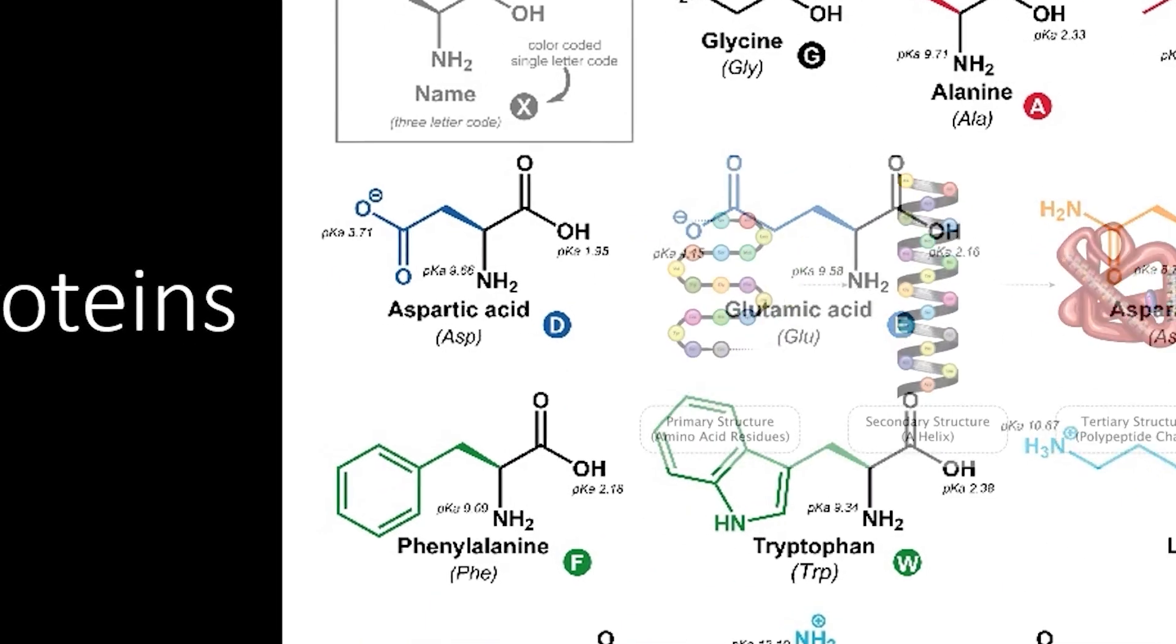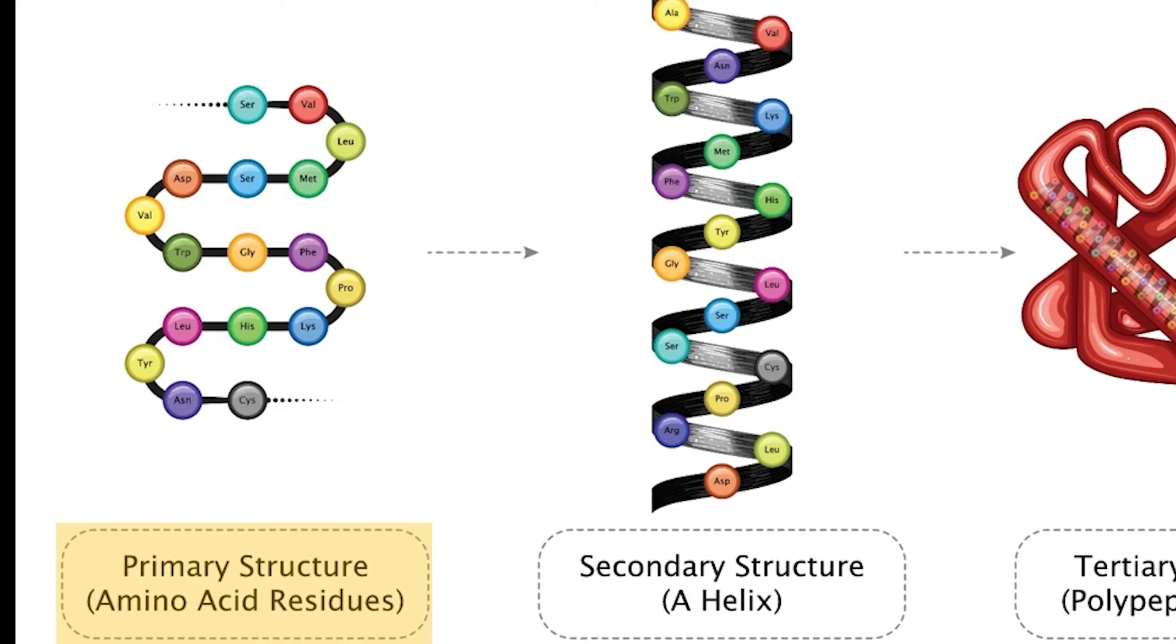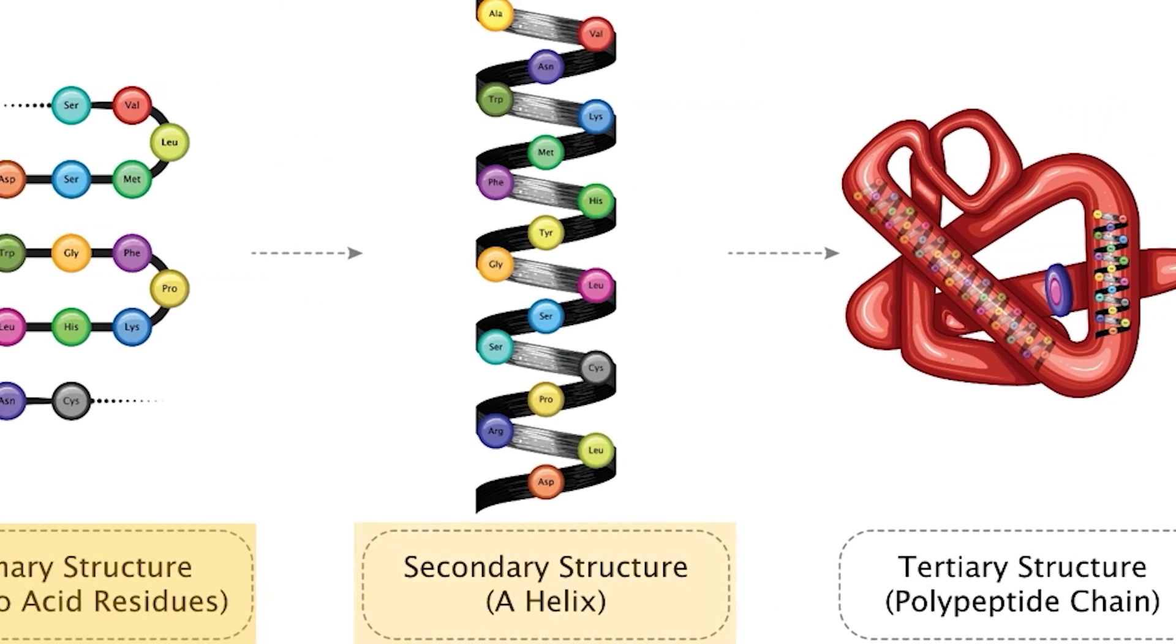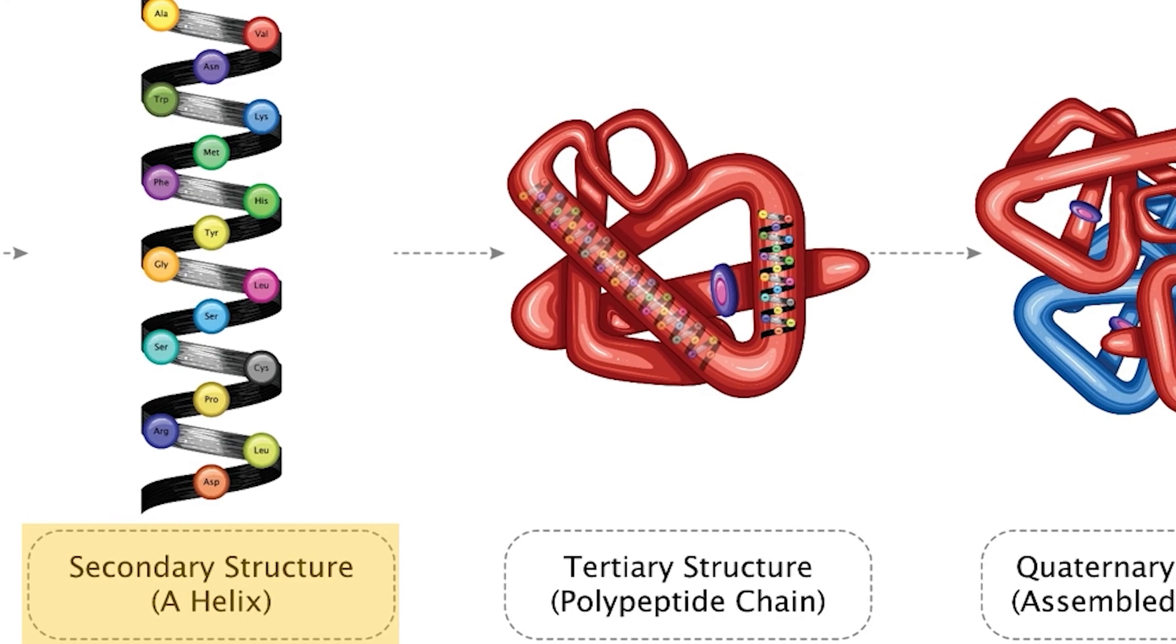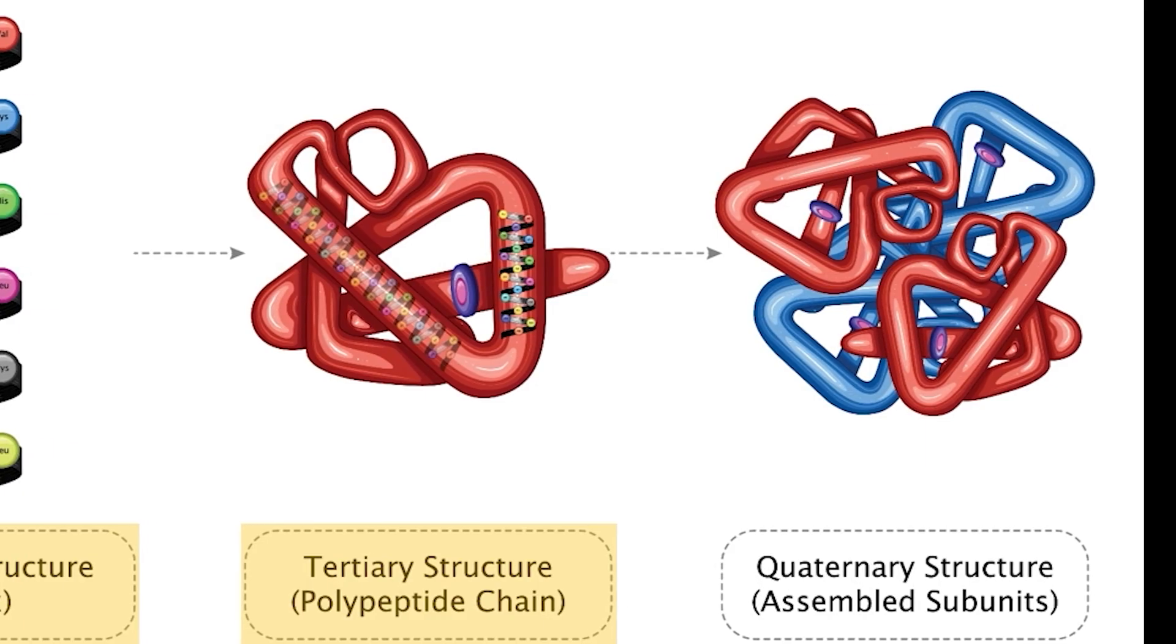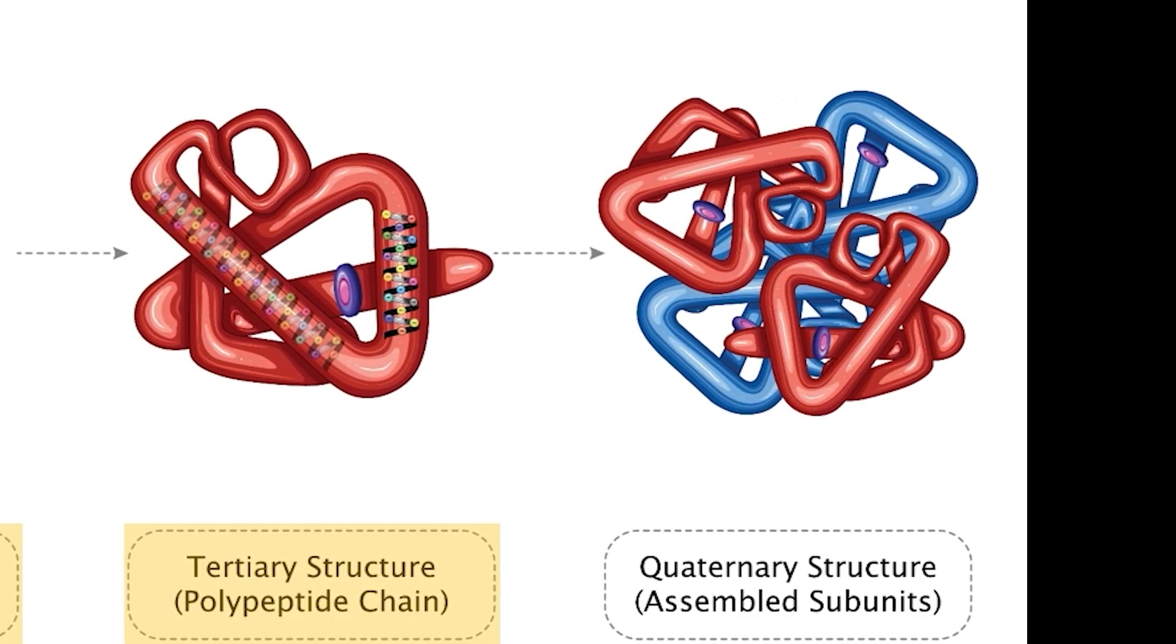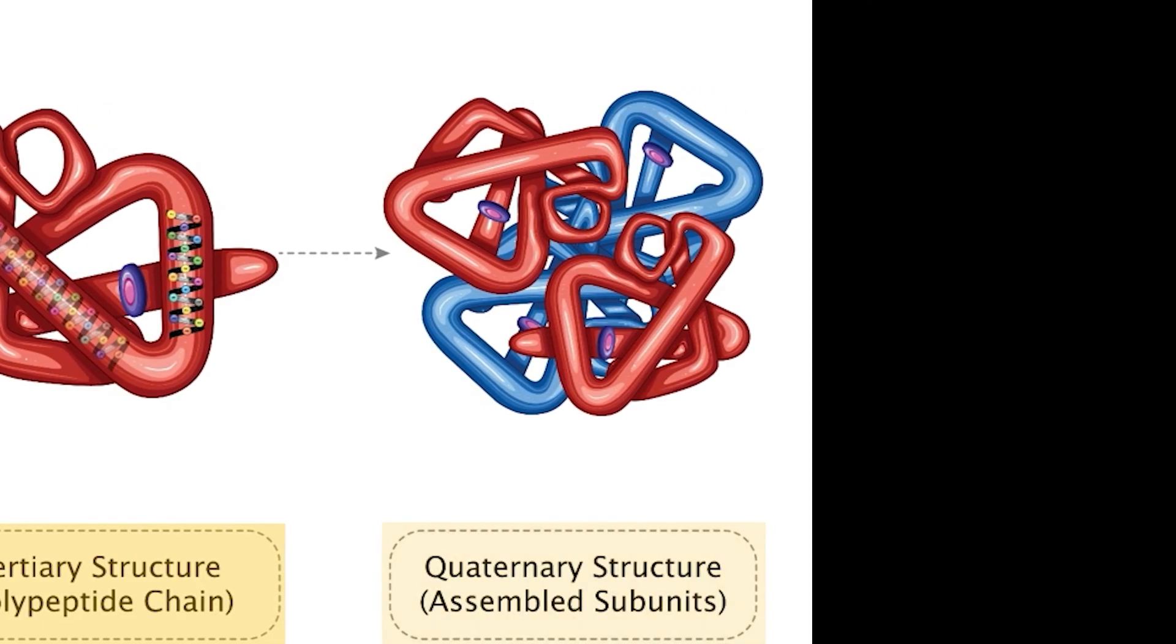First, the amino acids are linked together into a primary structure. Then, this structure self-organizes into secondary structures based on reactions between amino acids in the chain. Tertiary structure is determined by interactions between secondary structures. Finally, many proteins actually have quaternary structure, separate protein molecules that come together into a much larger functional structure.